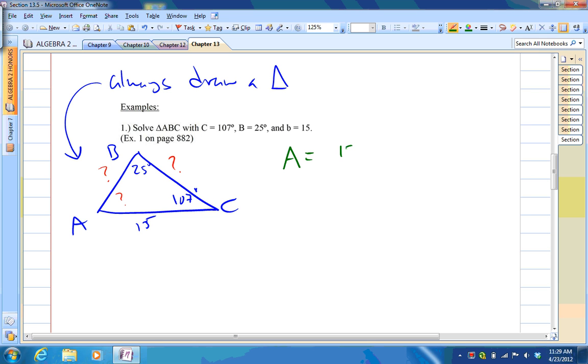Angle A should be easy. Simply 180 degrees minus 25 degrees plus 107 degrees. So, that would get me 48 degrees. And that is correct. Okay, now we're going to start using the Law of Sines. So, now we know this angle is 48 degrees. Let's say I want side A. So, the sine of 48 degrees over little a will equal the sine of 25 degrees over 15.